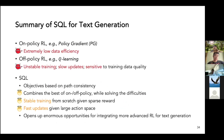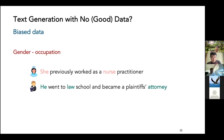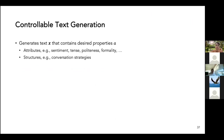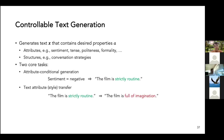So as a summary of the first part: with soft Q-learning you get more stable training and faster updates than previous RL formulations, even when you don't have supervised data. Next, I'm going to quickly go through the second part, trying to address the biased data problem for text generation, by formulating a causal perspective for controllable text generation.